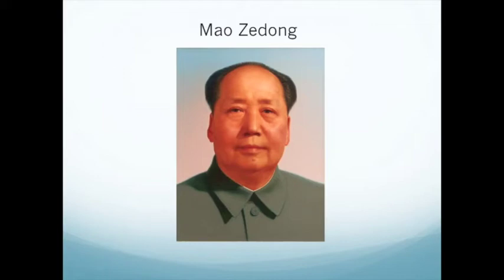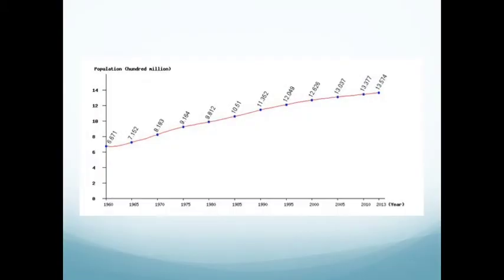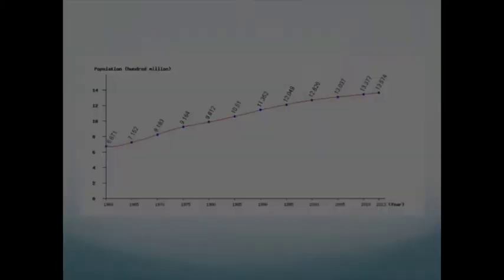Mao Zedong did not believe in contraception. In fact, he encouraged the people of China to have a lot of children because to him, the more manpower a country has, the stronger the country is. This prevented the spreading of family planning. From the year 1949, the country's population went from 540 million to 940 million in the year 1976. As seen in the graph, the country's population went from growing by 500,000 every 5 years to 1 million every 5 years. This was the impact of Mao Zedong's leadership.